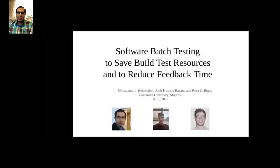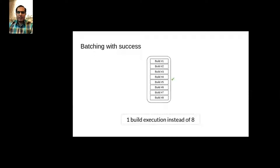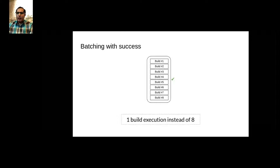Testing is expensive, and large projects and large companies spend a lot of resources on automated tests. One solution for decreasing cost is batching. For example, we can batch eight builds together and test them once instead of eight times, so we have one build execution instead of eight. If there's no failure, everything is good — we just have to test once.